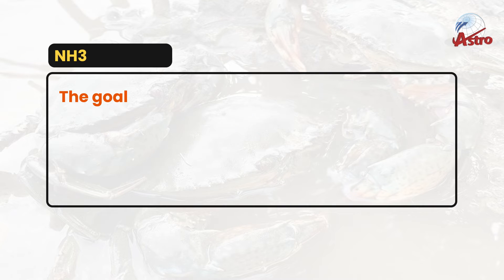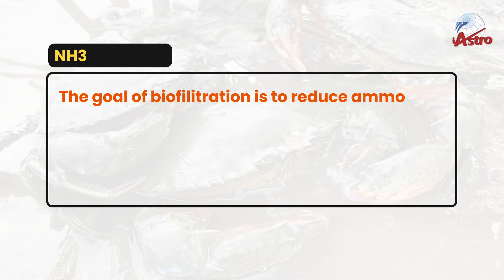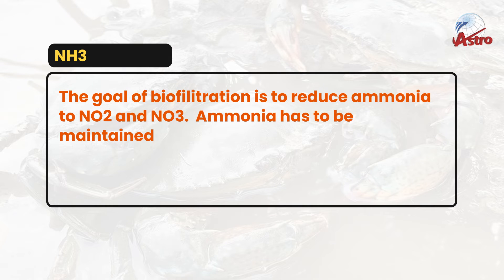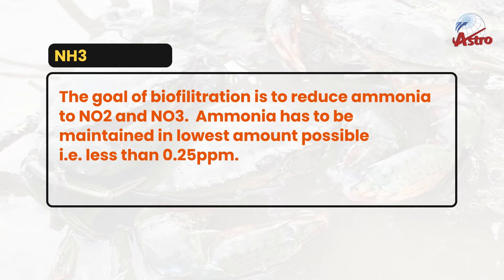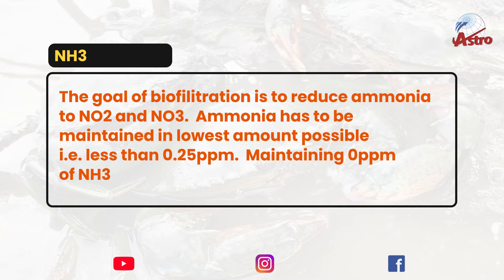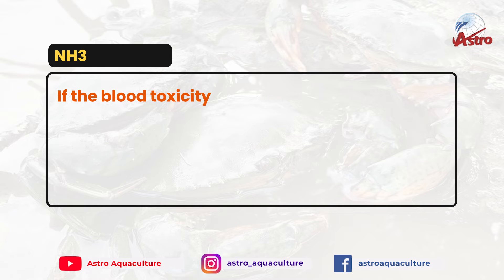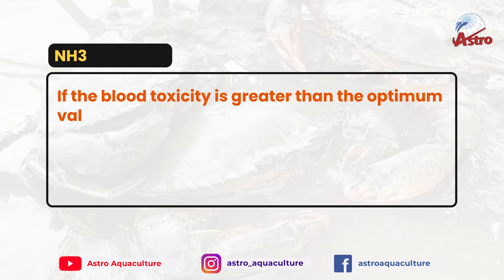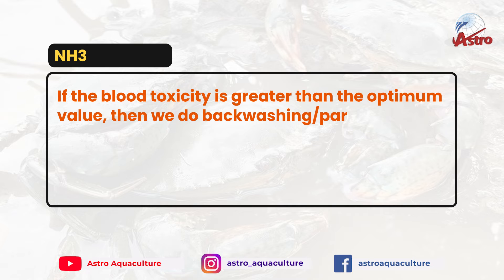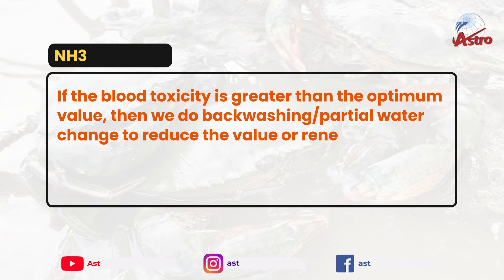The goal of biofiltration is to reduce ammonia to NO2 and NO3. Ammonia (NH3) has to be maintained at the lowest amount possible, i.e., less than 0.25 ppm. Maintaining 0 ppm of NH3 is the most ideal. If the toxicity is greater than the optimum value, then we do backwashing and partial water change to reduce the value or renew the water.